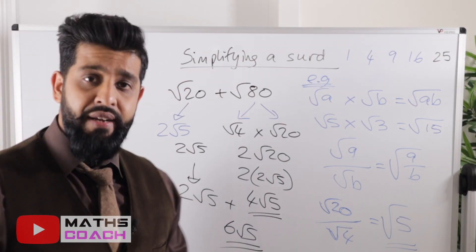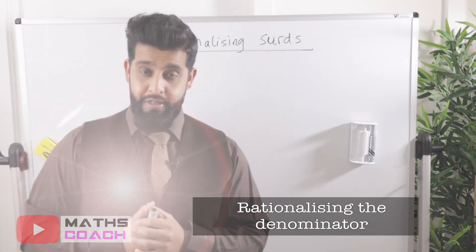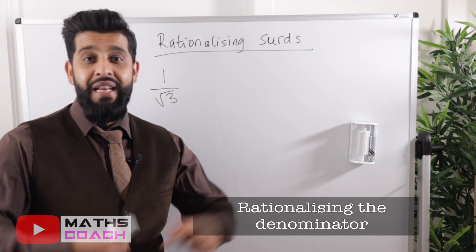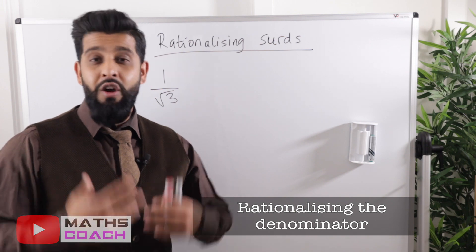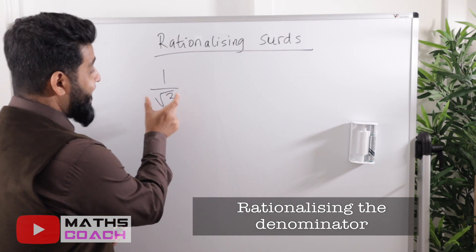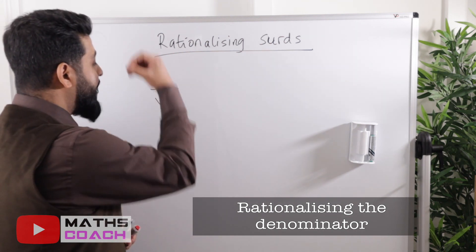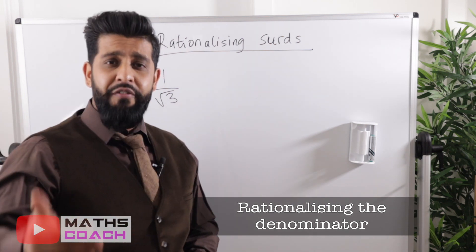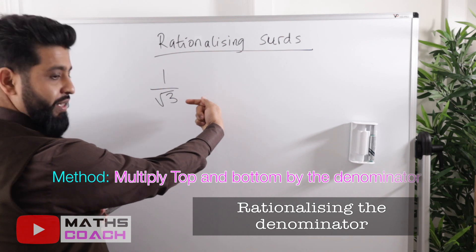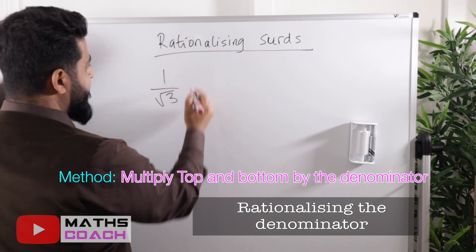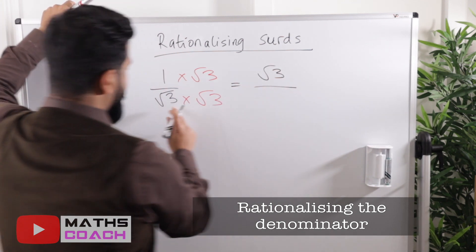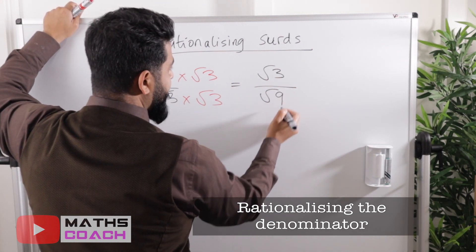Now we move on to rationalizing a surd. You need to rationalize when the denominator contains a square root. The process is straightforward: for 1/√3, multiply both the numerator and the denominator by √3. So the top becomes 1 × √3 = √3, and the bottom becomes √3 × √3 = √9 = 3. This gives √3/3.